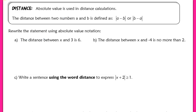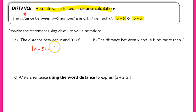For this next section, we rely on the concept that absolute value is used in distance calculations. The distance between two numbers a and b is defined as the absolute value of a minus b, or equivalently the absolute value of b minus a. We'll use this to convert plain English statements into math equations with absolute value notation. For example, 'the distance between x and 3 is 6' becomes the absolute value of x minus 3 equals 6.